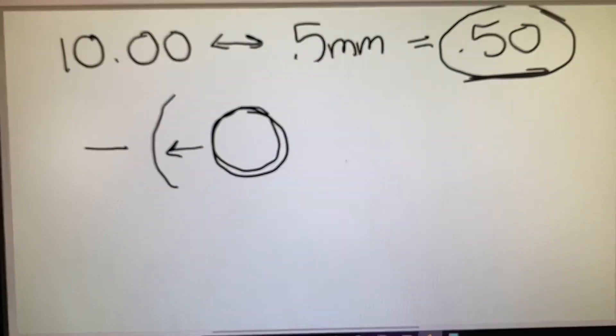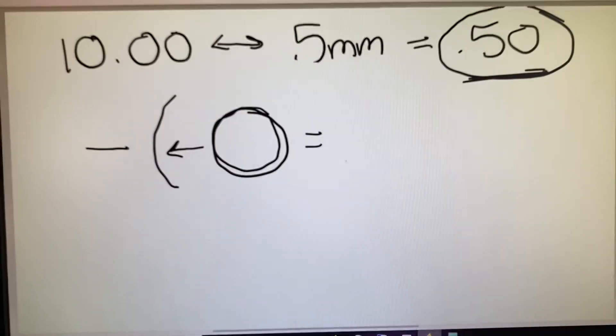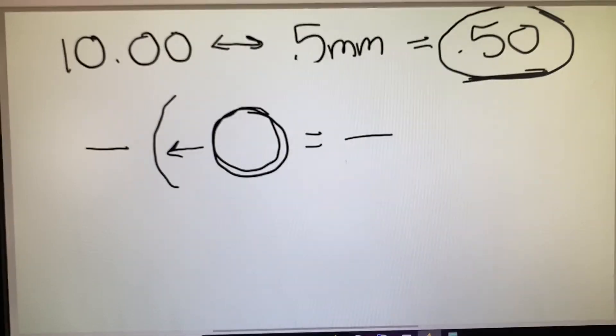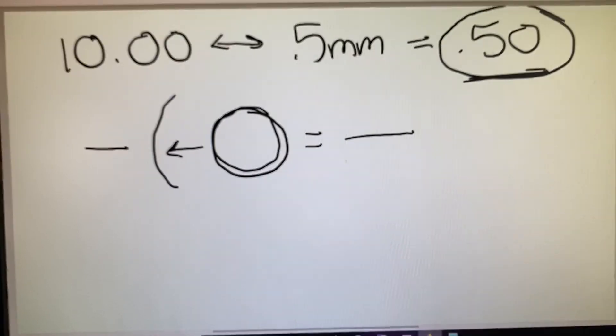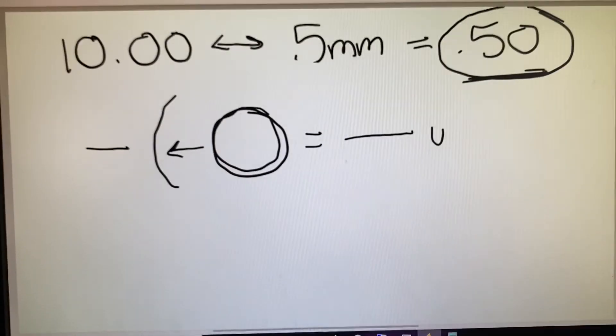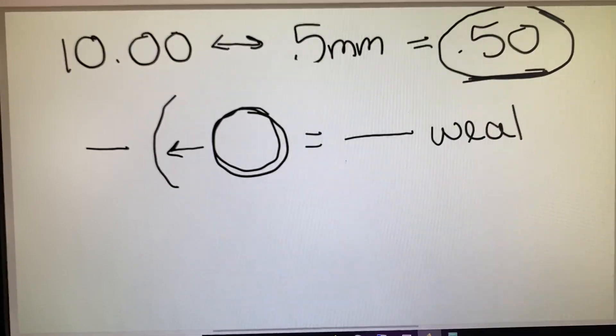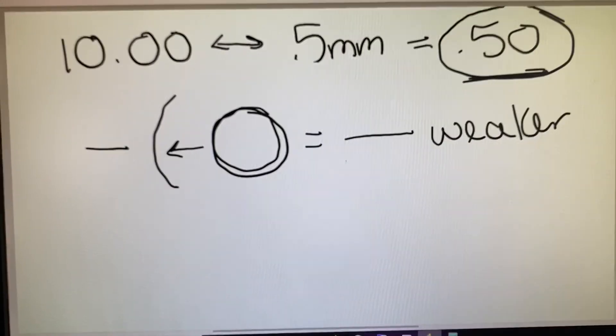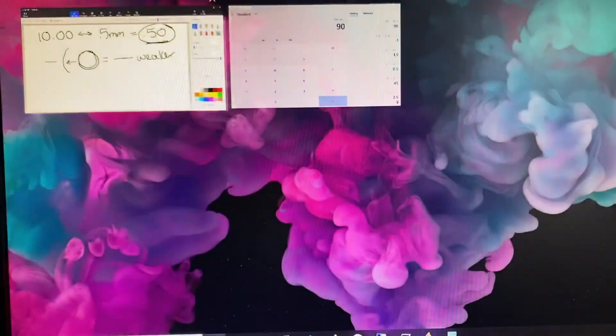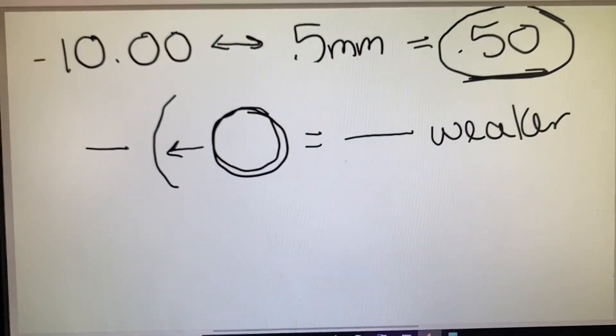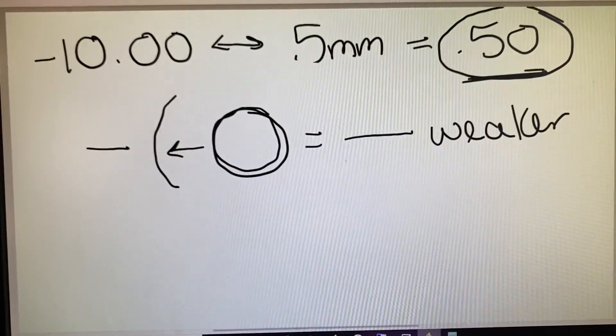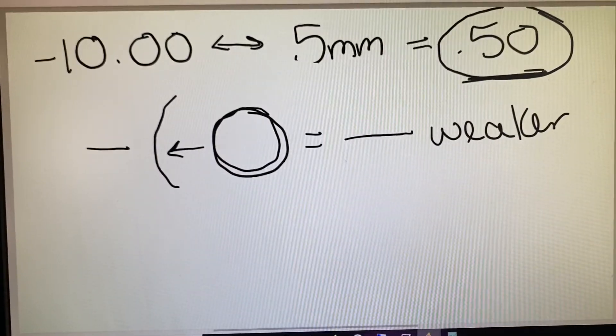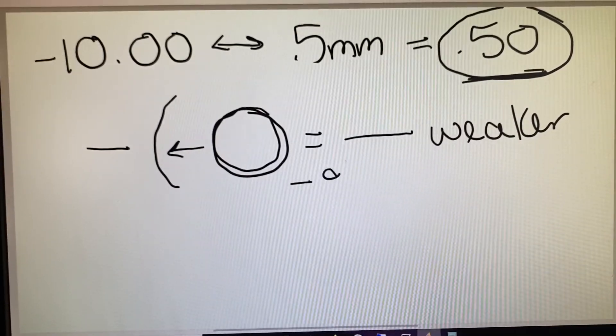this actually causes the prescription to get weaker, which means the patient would see a bigger image because minuses are minifying. So in this case, a minus lens moved further away gets weaker. So the patient, if we were talking about a minus 10, would feel like they are looking through a minus 9.50.